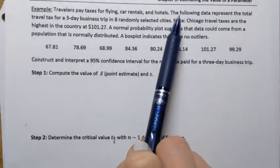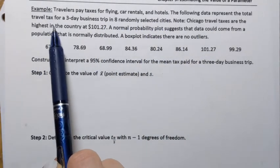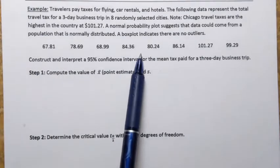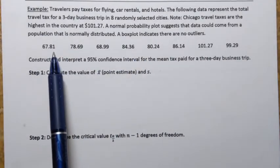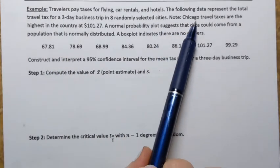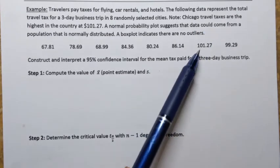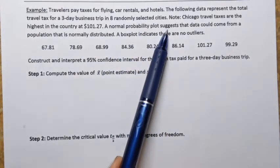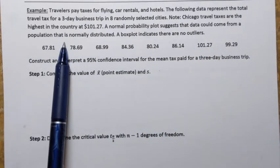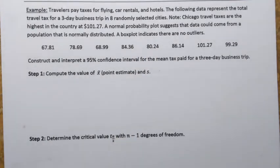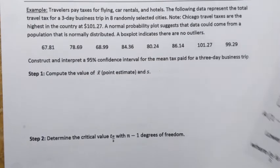Our example: travelers pay taxes for flying, car rentals, and hotels. The data represent the total travel tax for a three-day business trip in eight randomly selected cities. We're also told that Chicago's travel taxes are the highest in the country. Normal probability plots suggest the data could come from a normally distributed population, and a box plot indicates there are no outliers — we'll need all of that to check the conditions.